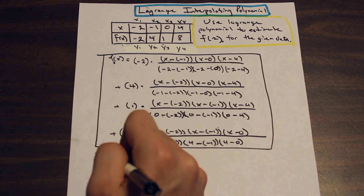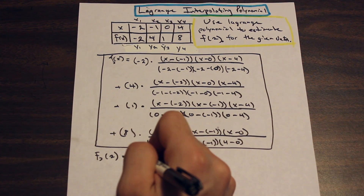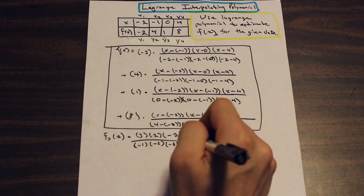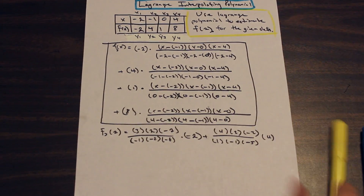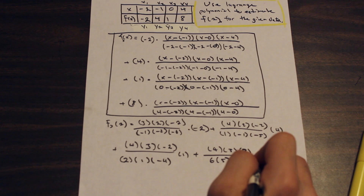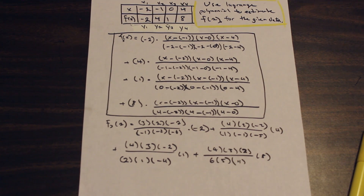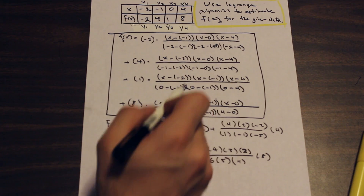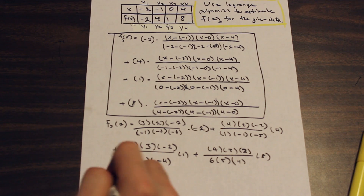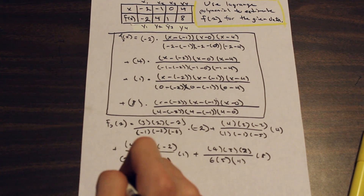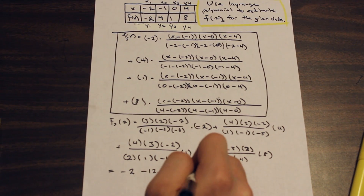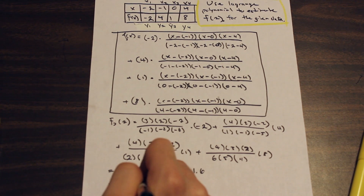So we have f3(2) equal to the simplified expression after plugging in 2. We simplify the negatives and clean things up. Calculating the four terms gives us −2, minus 12.8, plus 3, plus 1.6, which adds up to −10.2.